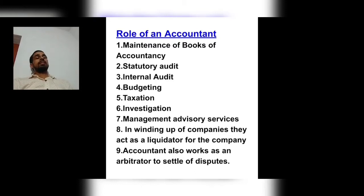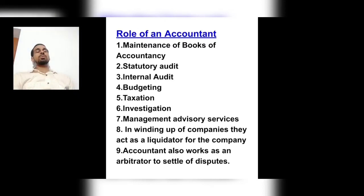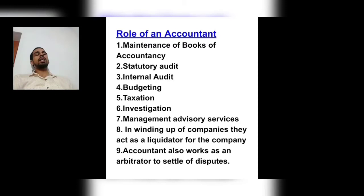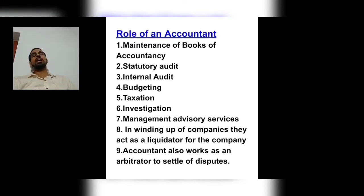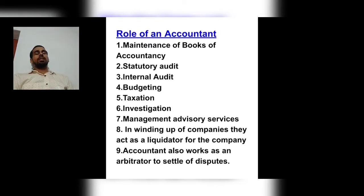The sixth role is taxation — when we calculate tax on sales, assets, profit, and net worth, it is also the accountant's responsibility to accurately calculate taxation. The seventh role is investigation — it is not enough to just check arithmetical accuracy or verify double-entry system rules. For example, suppose in a business entity there is a car worth four lakh but it has been recorded at eight lakh — the accountant's role is to cross-check that value and take action if it is wrong.